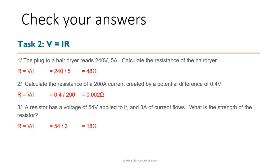Now let's check our answers to task 2. A plug to a hair dryer reads 240 volts and 5 amps. R = V / I = 240 / 5 = 48 ohms. Calculate the resistance of a 200 amp current created by a potential difference of 0.4 volts: R = 0.4 / 200 = 0.002 ohms. A resistor has a voltage of 54 volts applied to it and 3 amps of current flowing. R = 54 / 3 = 18 ohms.